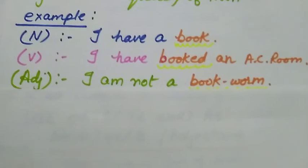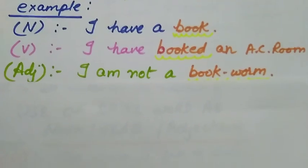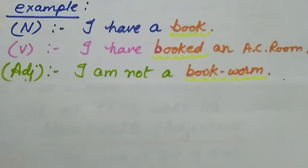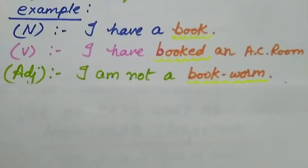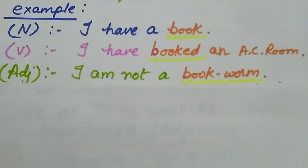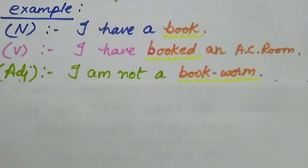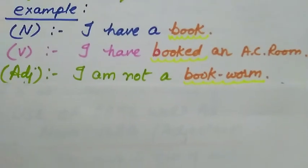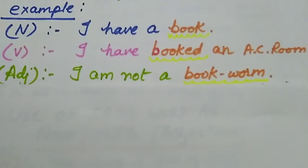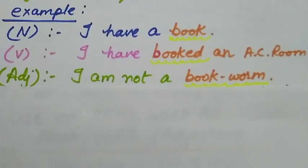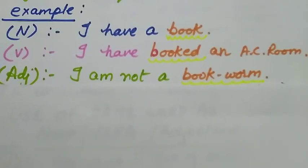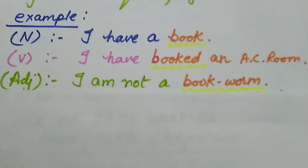As an adjective, if we have to make a sentence where 'book' is used as an adjective: I am not a book worm. The same word is used in different places in different ways, and in all sentences the meaning of the word is different.